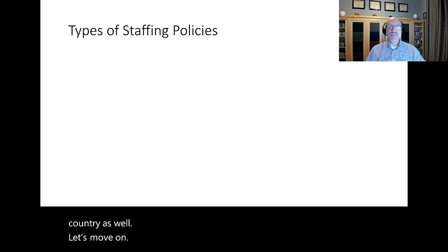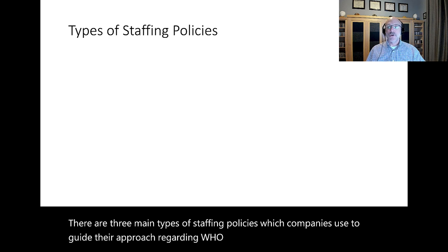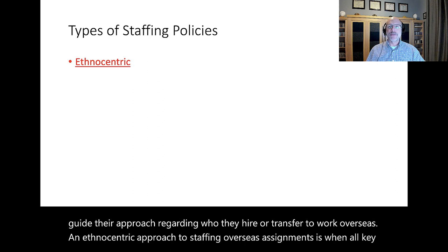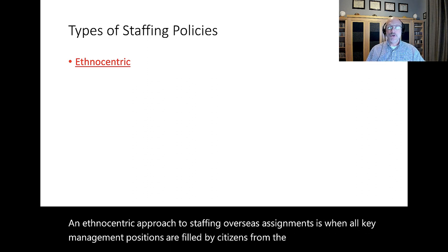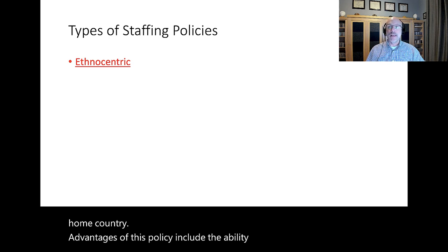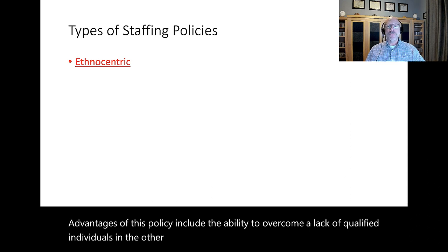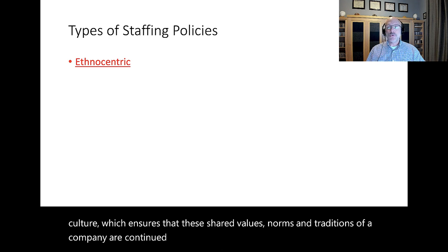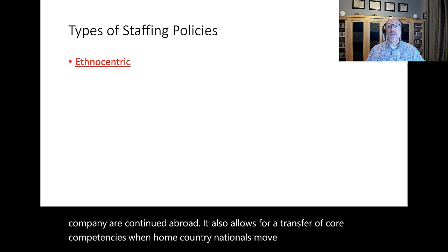There are three main types of staffing policies which companies use to guide their approach regarding who they hire or transfer to work overseas. An ethnocentric approach to staffing is when all key management positions are filled by citizens from the parent company's home country. Advantages include the ability to overcome a lack of qualified individuals in the other country, a unified corporate culture ensuring shared values and norms continue abroad, and a transfer of core competencies when home country nationals move overseas.